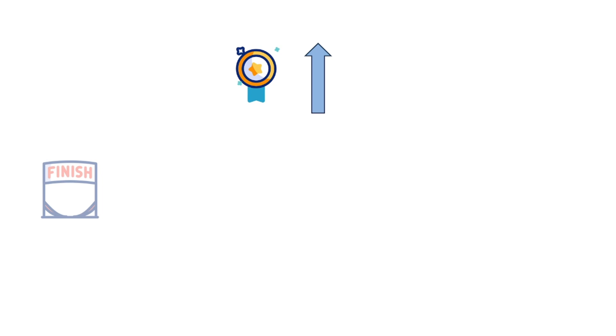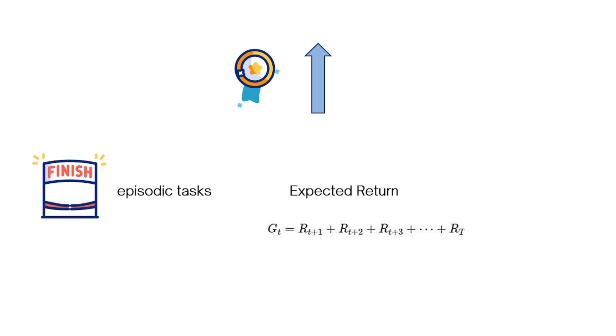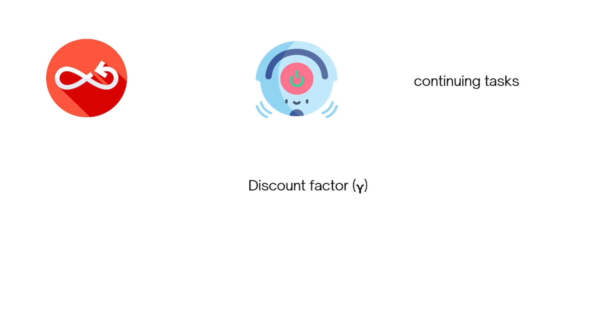The agent's goal is to maximize its cumulative rewards, but how do we represent this mathematically? For tasks that have a clear end — called episodic tasks — we calculate the expected return. But what if there's no end? Imagine a robot vacuum that cleans continuously; it doesn't have a final goal. For these continuing tasks, we tweak the formula using something called a discount factor. The discount factor is a number between zero and one; it helps the agent focus more on immediate rewards rather than far-off rewards, making the agent prioritize actions that bring benefits sooner rather than later.